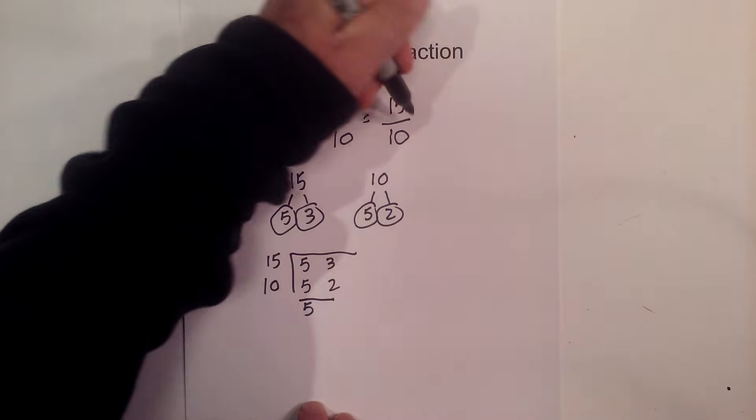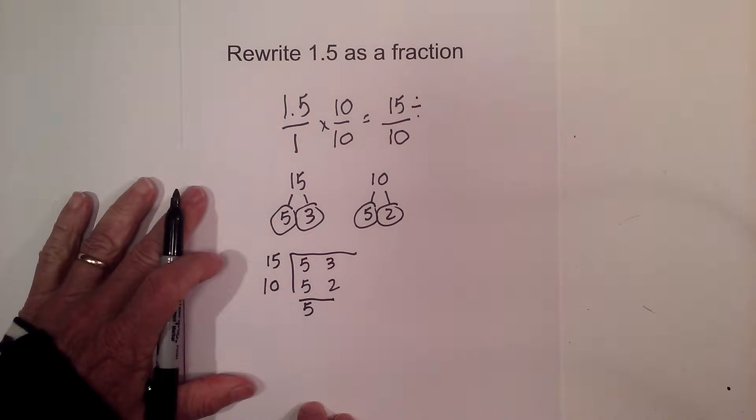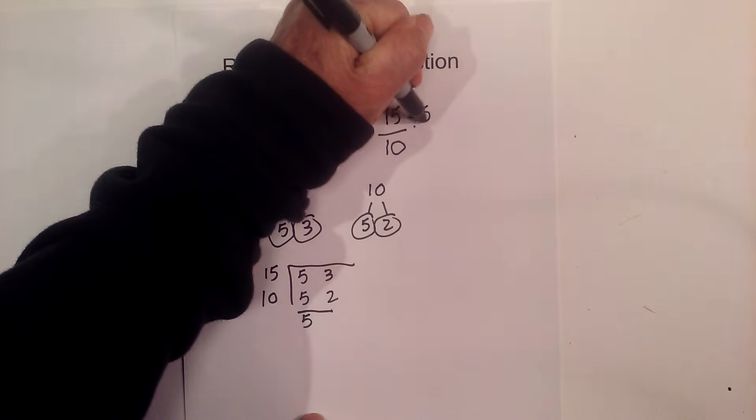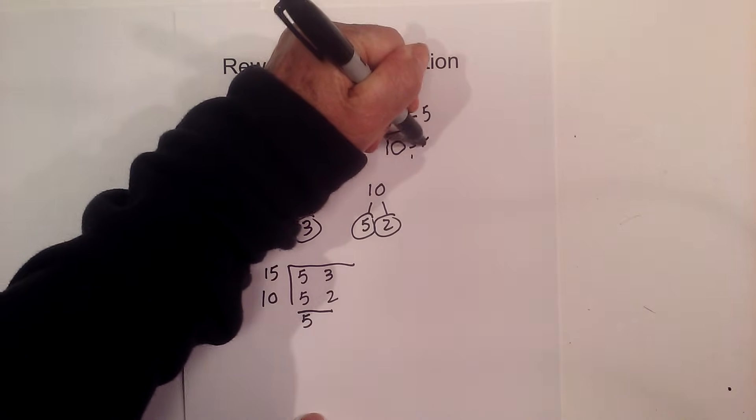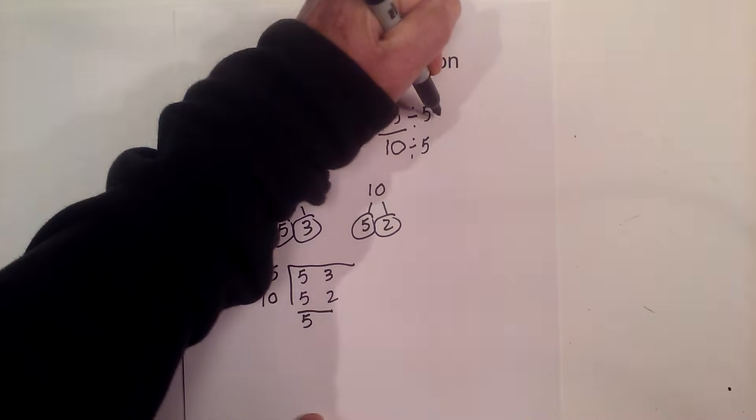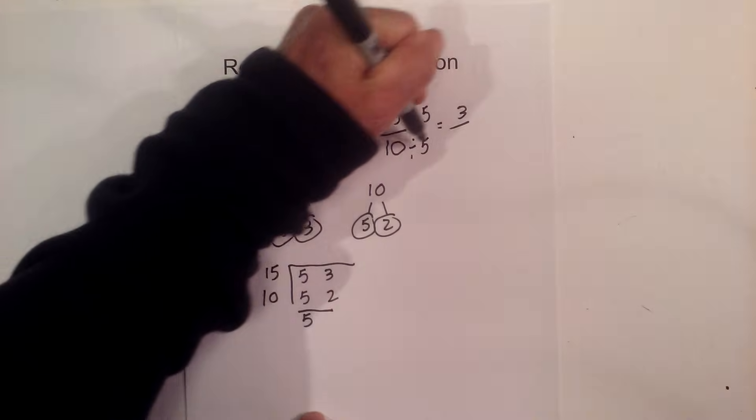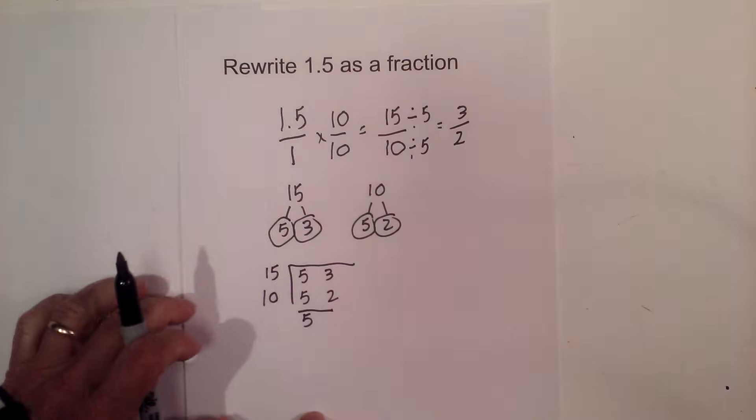So now let's go back to the fraction we are reducing. And I'm going to divide 15 by 5 and 10 by 5. And that gives me 15 divided by 5 equals 3, 10 divided by 5 is 2. 3 halves.